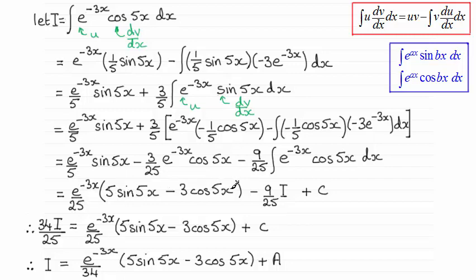And then we add 9 twenty-fifths i to both sides. So that gives me 34 i over 25. And I've also put in that constant of integration c. Then all I do next is just multiply through by 25 and divide by 34. And that gives me this result here.